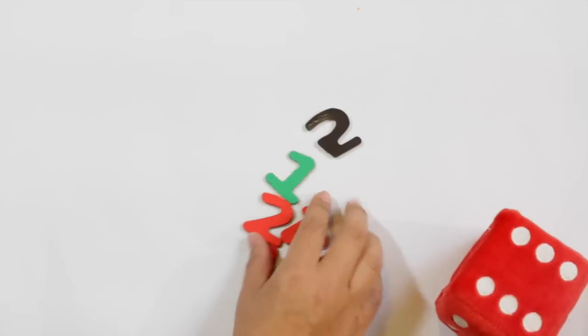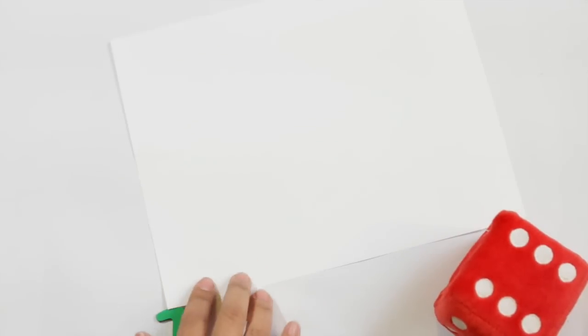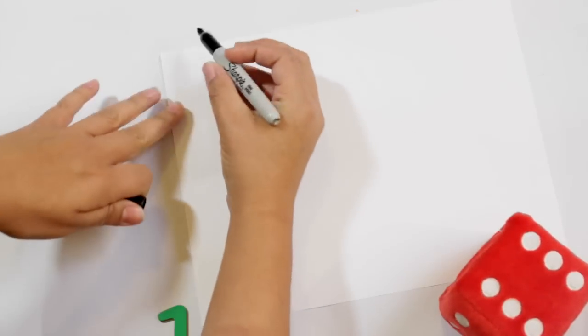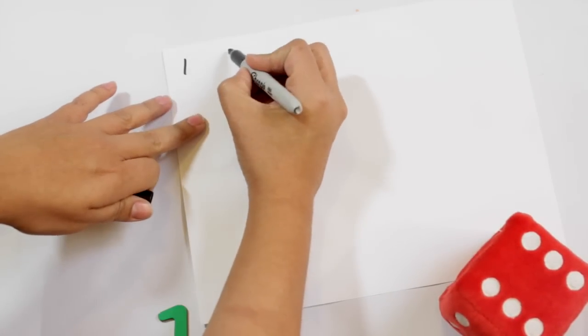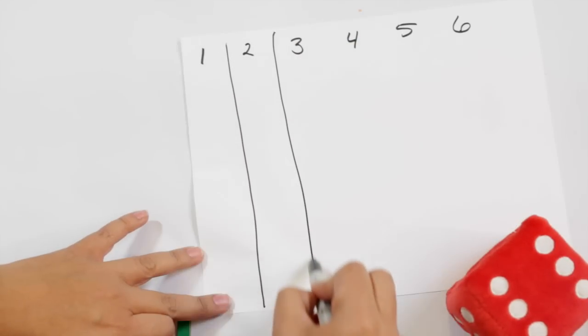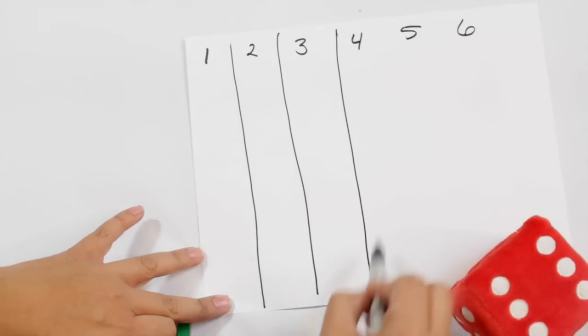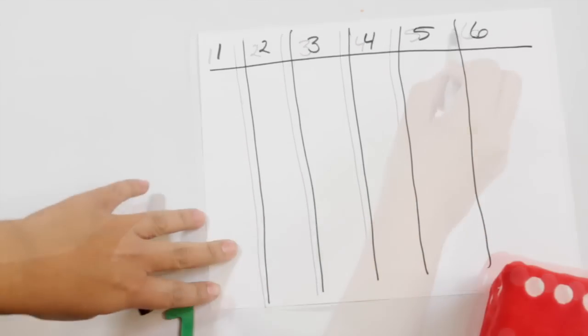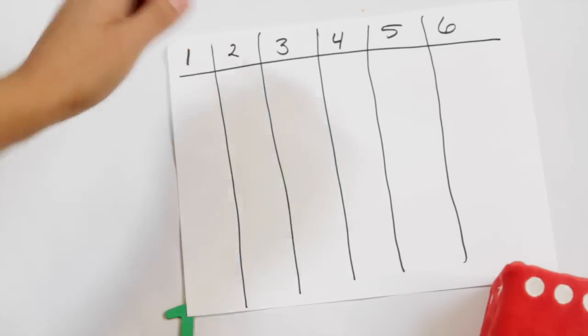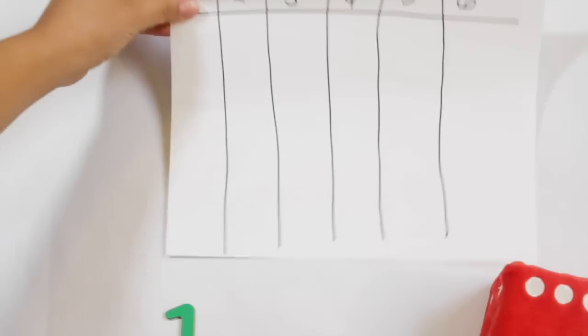If you don't have these numbers, you can just use a plain piece of paper and go ahead and write. You could be far neater than I am. I'm just kind of winging this here for the video, and then you have a little chart. So you don't have to have those magnets, but you can just make one on your own.